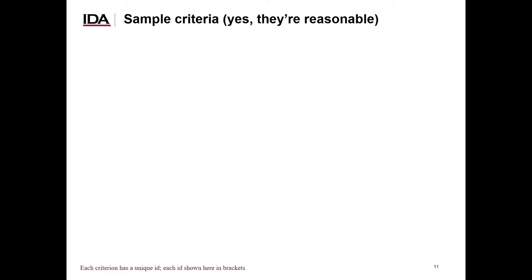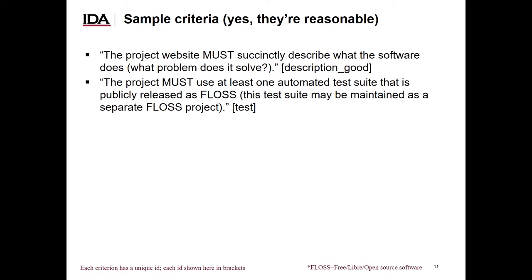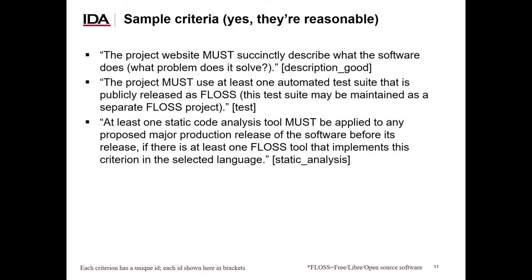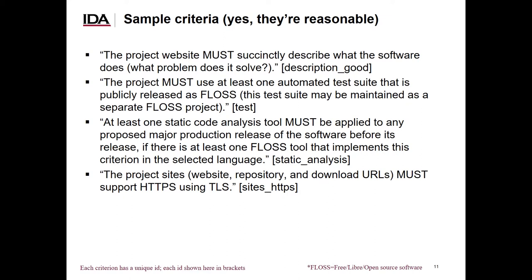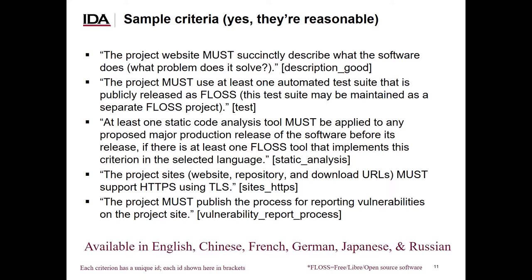Here are a few sample criteria. Note that the criteria use the term FLOSS instead of open-source software or OSS, to try to include everyone who developed such software, regardless of their motivations. Every criterion has a unique identifier shown in square brackets. For example: the project website must succinctly describe what the software does; the project must use at least one automated test suite that's publicly released as FLOSS; at least one static code analysis tool must be applied to any proposed major production release; project sites must support HTTPS using TLS; and the project must publish the process for reporting vulnerabilities. These criteria are available in English, Chinese, French, German, Japanese, and Russian.